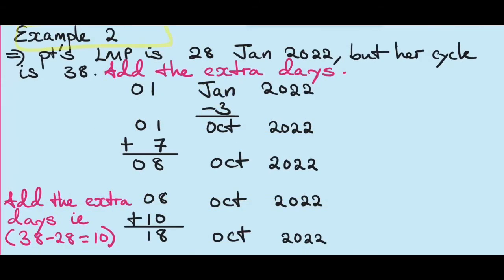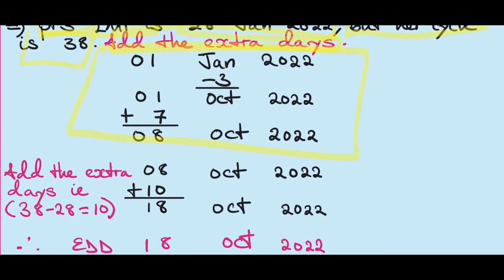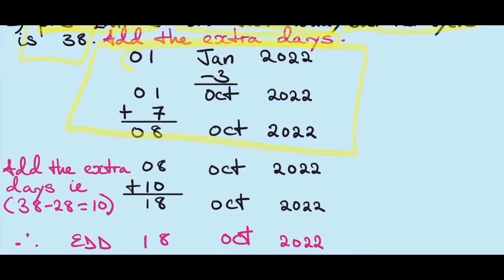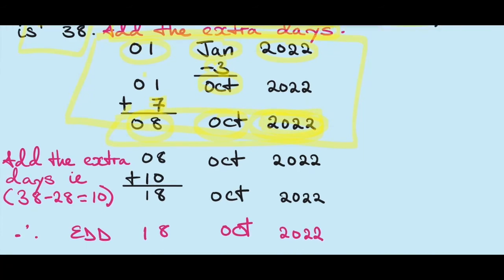For a longer cycle, the average cycle length is 28 days. The patient's LMP is 28th January 2022 but her cycle lasts 38 days, which is 10 extra days. You add those extra days to the EDD. Using method 1 of Naegele's rule: subtract 3 from the month giving October, add 7 to the day giving 8th October 2022 — 9 months from January falls in the same year, so no change to the year. Then add the extra 10 days to the EDD, giving 18th October 2022. That is the correct EDD for this woman with a longer cycle.